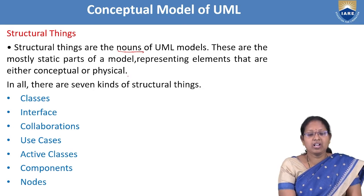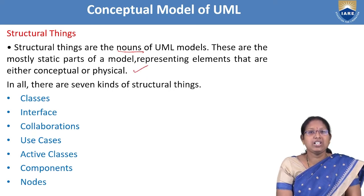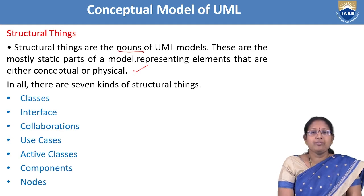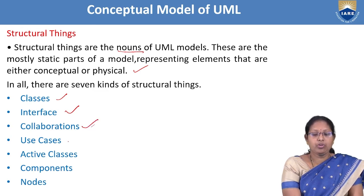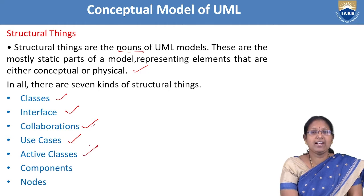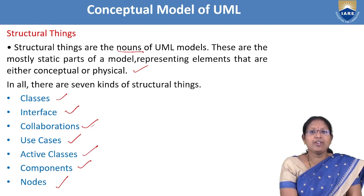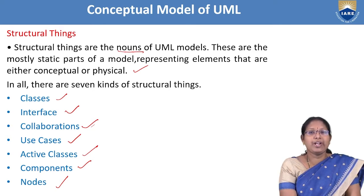The seven kinds of structural things are: class, interface, collaboration, use case, active class, component, and node.